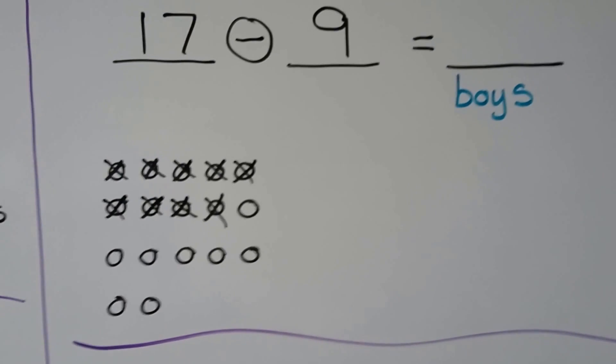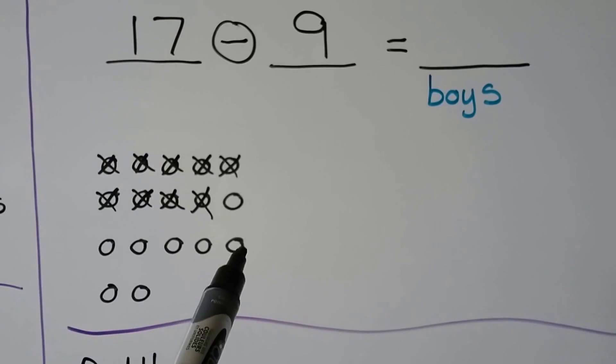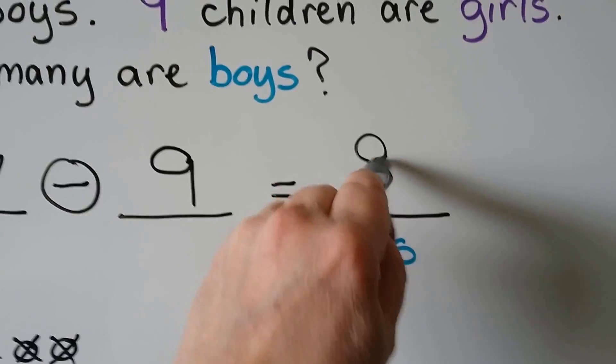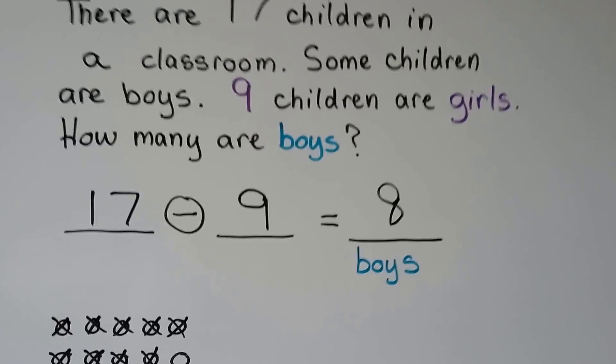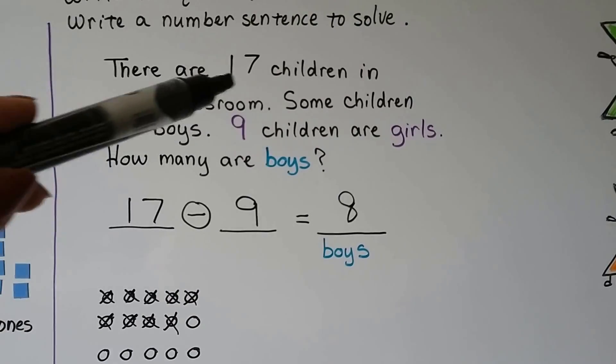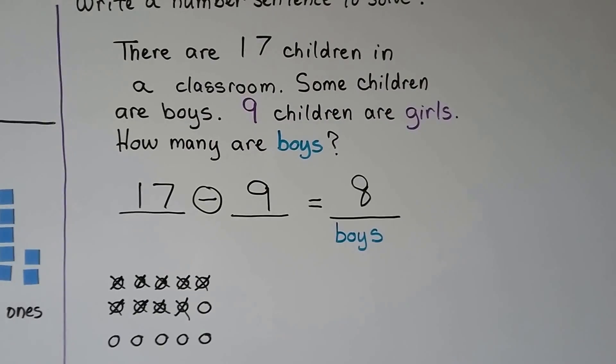The ones that are left are the boys. We have 1, 2, 3, 4, 5, 6, 7, 8. There's 8 boys. We knew it was a subtraction sentence because we needed to find the difference between the girls and how many children were in the class.